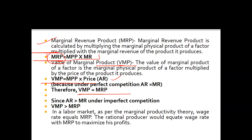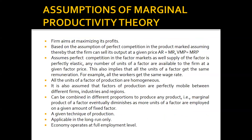Under perfect competition AR equals MR, so VMP equals MRP. Under imperfect competition, average revenue is greater than marginal revenue, so VMP is greater than MRP. In the labor market, as per marginal productivity theory, the wage rate equals MRP. A rational producer equates the wage rate with MRP to maximize profit.